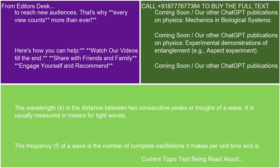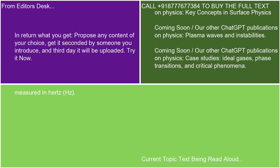The wavelength λ is the distance between two consecutive peaks or troughs of a wave, usually measured in meters for light waves. The frequency f of a wave is the number of complete oscillations it makes per unit time, and is measured in hertz (Hz).